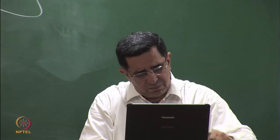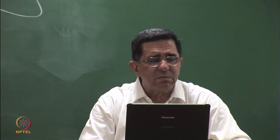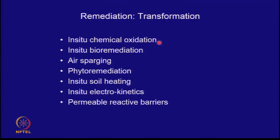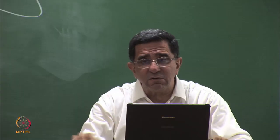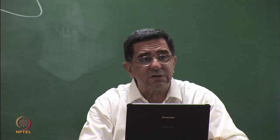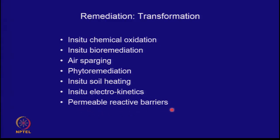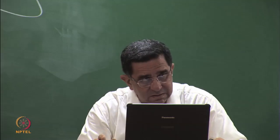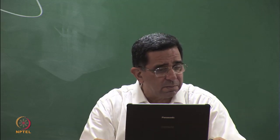One philosophy is: can we transform the material in-situ? Can we do in-situ oxidation, in-situ bioremediation, air sparging, phytoremediation, in-situ soil heating, in-situ electrokinetics, or use permeable reactive barriers? In electrokinetics, you apply net negative and positive charge so the contaminant migrates to one of the electrodes. The idea is to transform the contaminant — to immobilize it so it is no longer water soluble and no longer travels with the water.